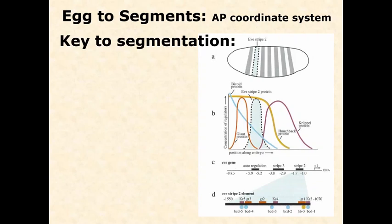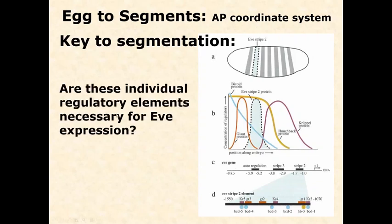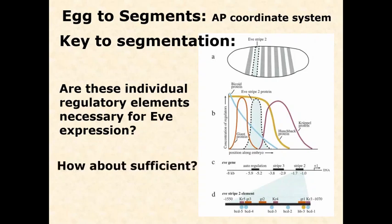What I do want you to understand is that there are more than one ways to turn on a gene, and that is because of these individual regulatory elements. This should be a fairly easy question if you understand the concepts: Are the individual regulatory elements that control stripe 2 necessary for Eve expression? The fact that we have other regulatory element regions that control expression of that gene and turn it on in other areas of the body tells you right away — no. The stripe 2 elements are together sufficient because they do it on their own, but they're not necessary because there are other ways to turn on this gene.